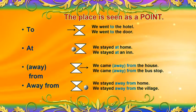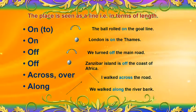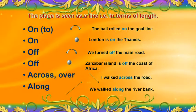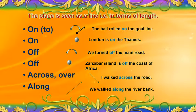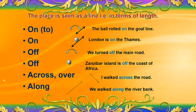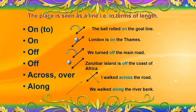Similarly, if the place is seen as a line — that is, in terms of length — the prepositions used are: on to, on, off, across, and along. For example: the ball rolled on the goal line. London is on the Thames. We turned off the main road. Zanzibar Island is off the coast of Africa. I walked across the road. We walked along the river bank.